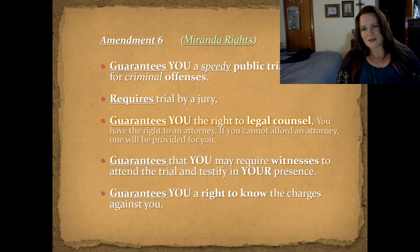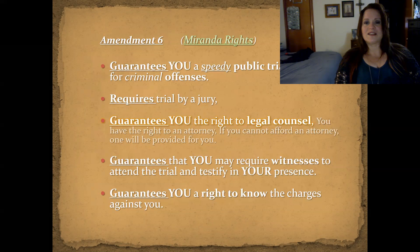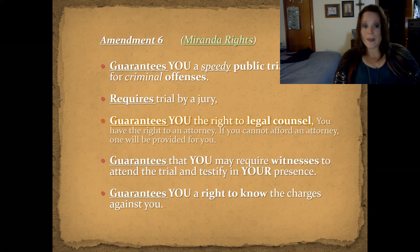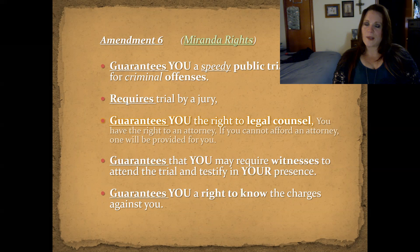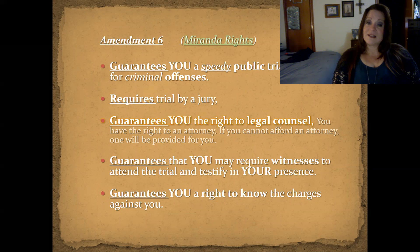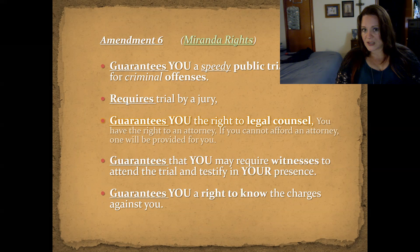Amendment Six, which is also partially where we get our Miranda rights, guarantees you a speedy public trial for criminal offenses and requires trial by jury. It guarantees you the right to legal counsel — you have the right to an attorney, and if you cannot afford an attorney, one will be provided for you. It guarantees that you may require witnesses to testify in your presence, and that you have the right to know the charges brought against you.